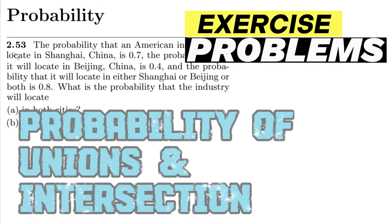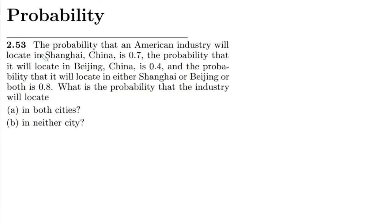Welcome back, this is question 2.53. The probability that an American industry will locate in Shanghai, China is 0.7, the probability that it will locate in Beijing, China is 0.4, and the probability that it will locate in either Shanghai or Beijing or both is 0.8.